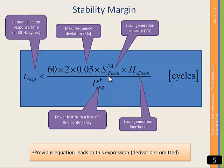S-rated is the volt ampere capacity tied to the generator bus. P-step is the amount of power stepped at once onto the generator due to a contingency. H is the aggregate inertia constant at the generator bus.